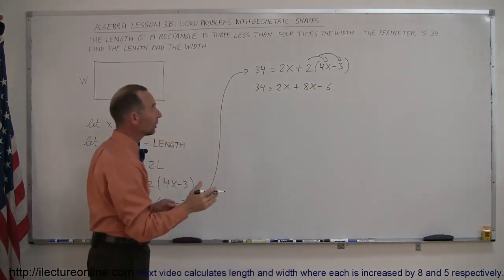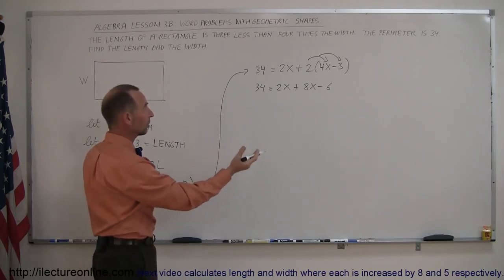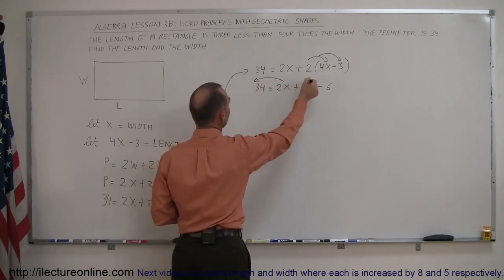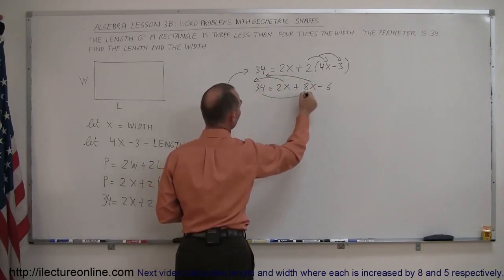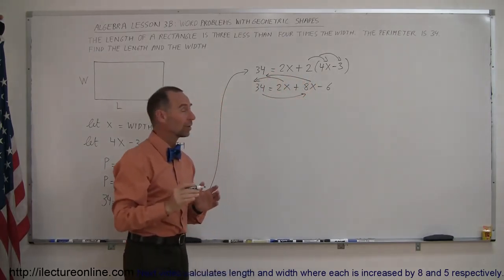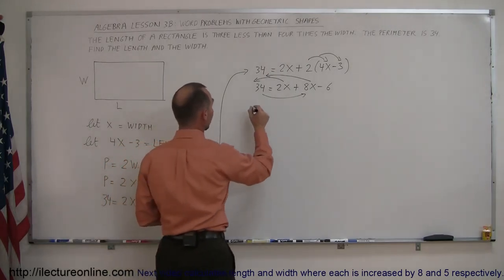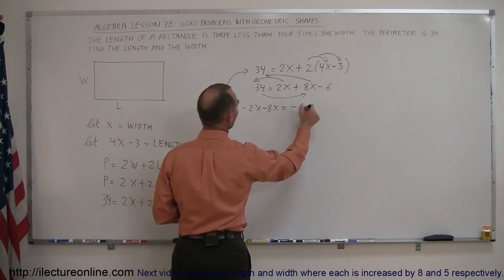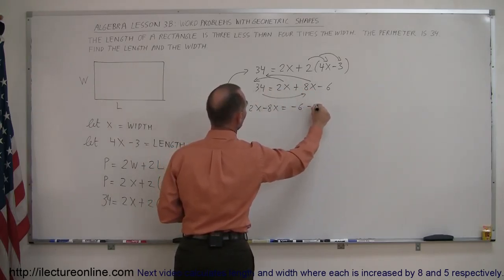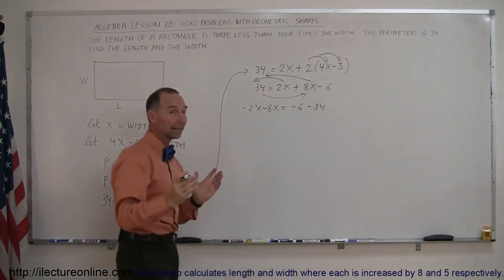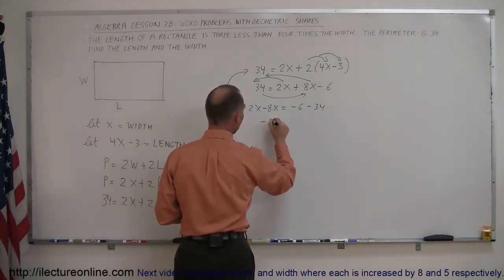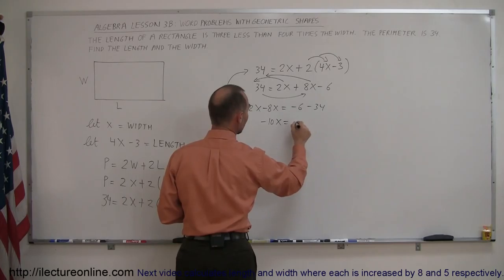Now, the next step is to move all the terms with the x in it to the left side, everything else to the right side. So we're going to move the 2x and the 8x to the left and the 34 to the right. Again, when you cross the equal sign, you change the sign. So this becomes minus 2x minus 8x equals minus 6, which is already on the right side, minus 34. Then, combining like terms, minus 2x minus 8x is minus 10x equals, that would be minus 40.